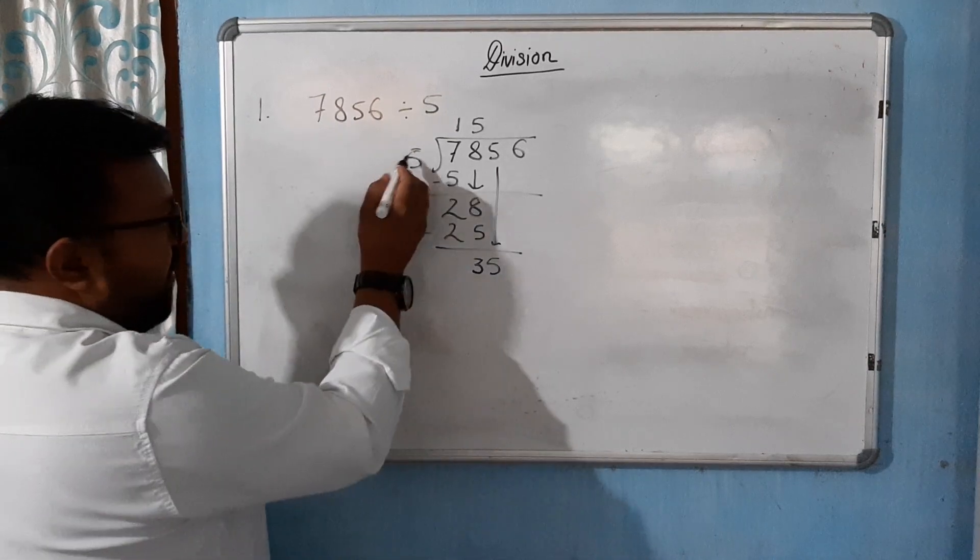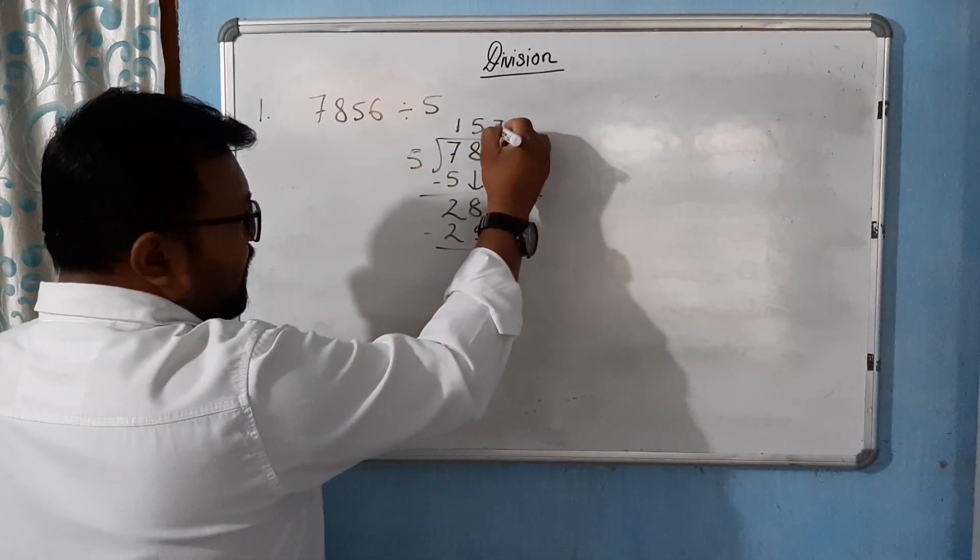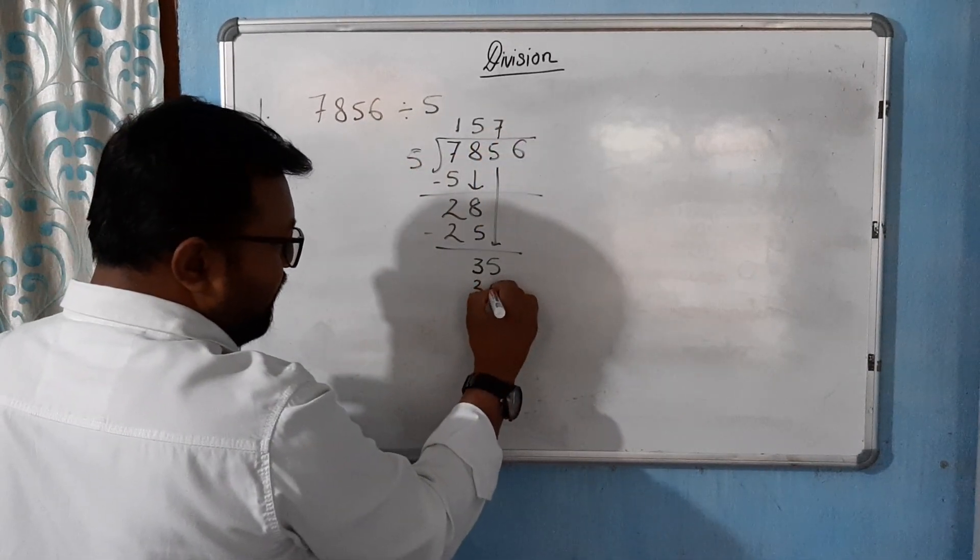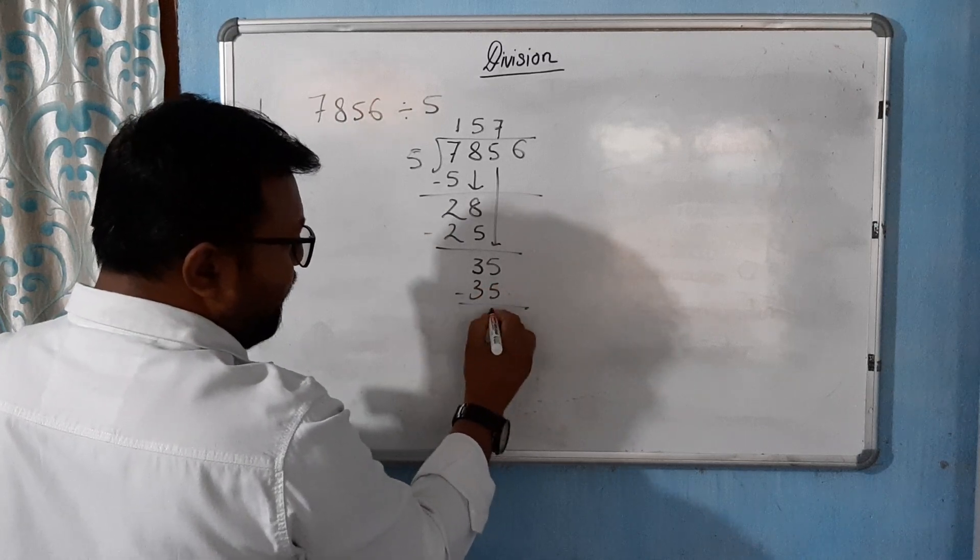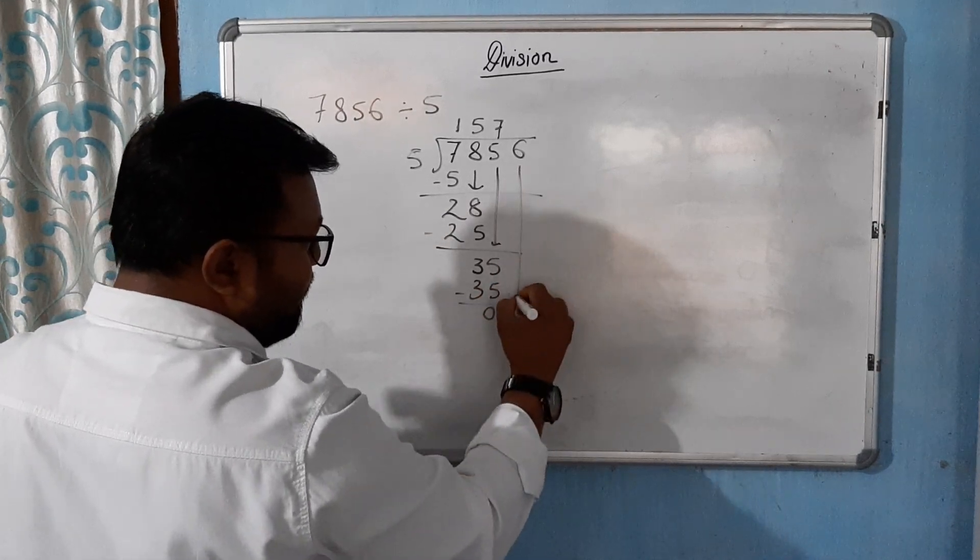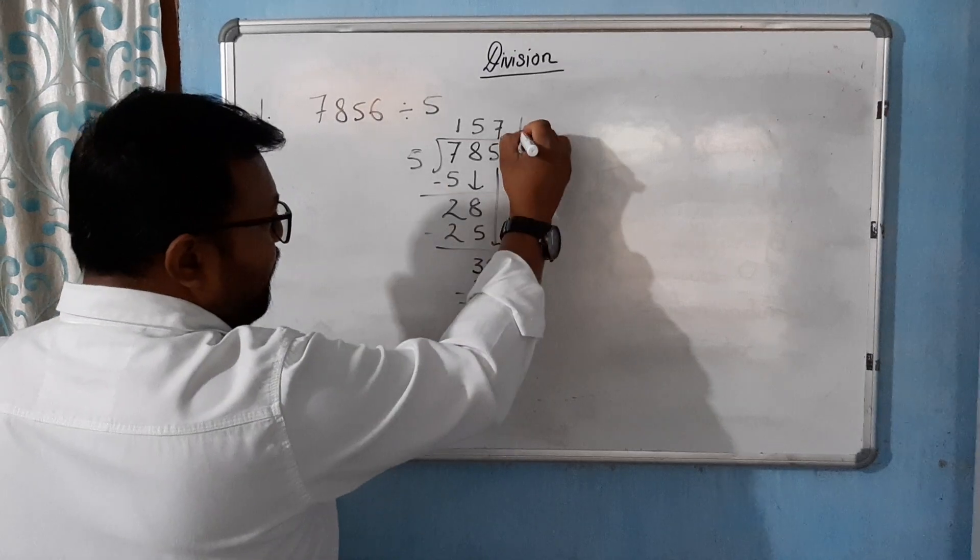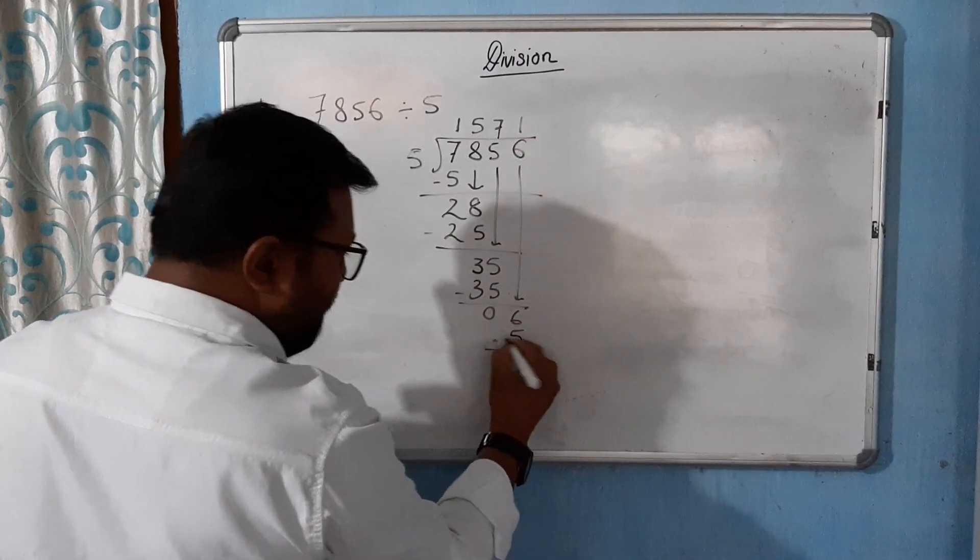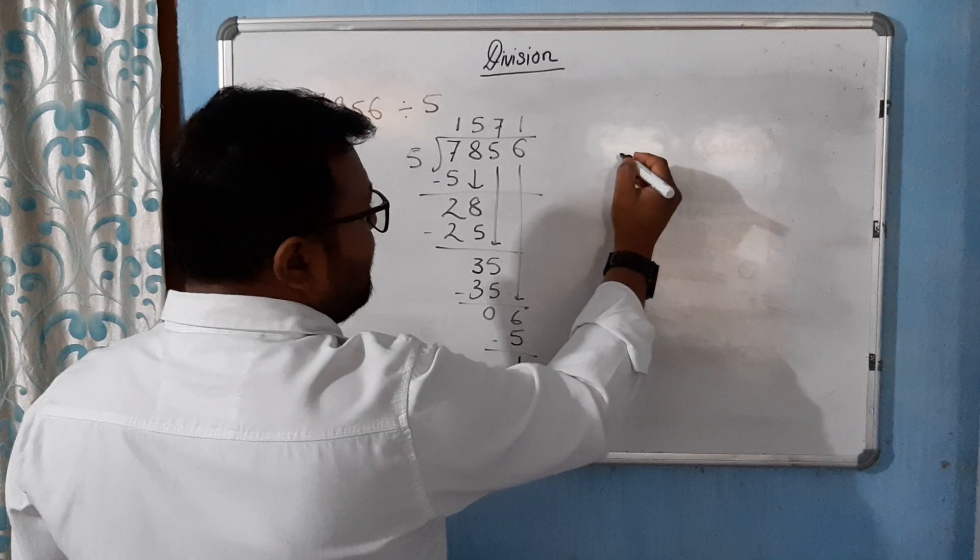Now 5 will come down here. 5 into 35 is 7, 0. 35, 0. This 6 will come down here. 5 into 6 is 1, 5. 1.